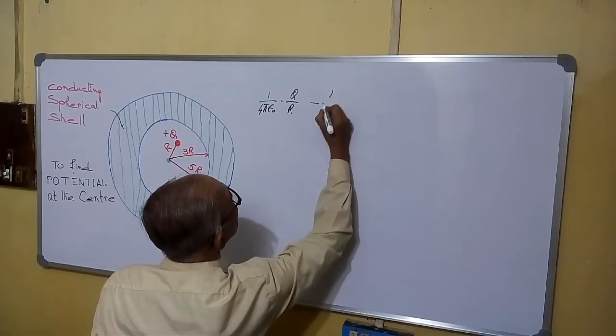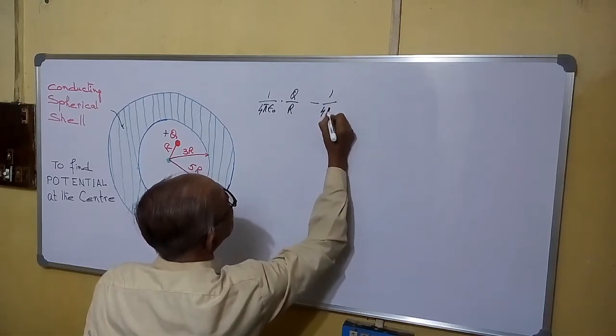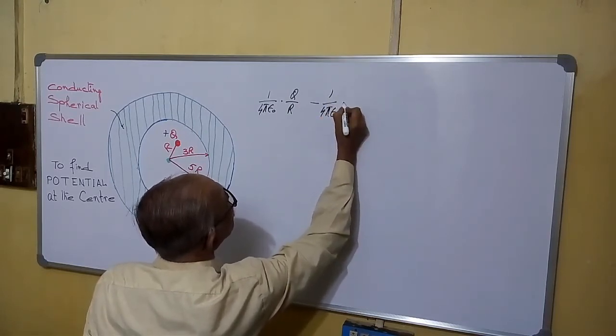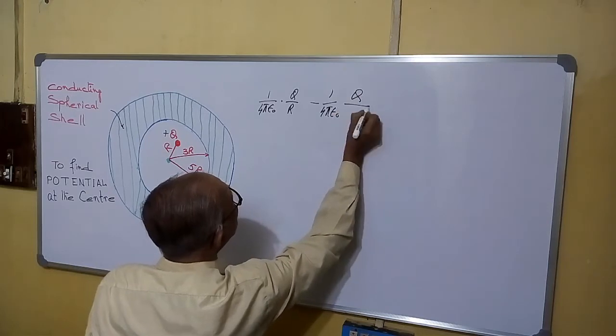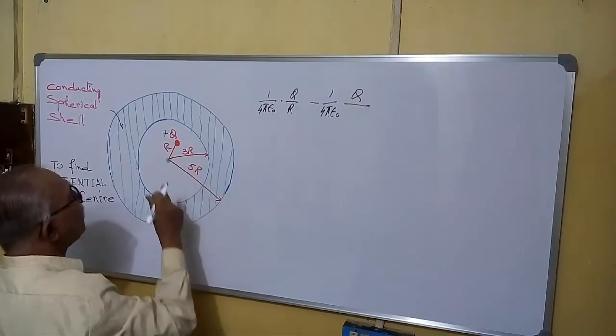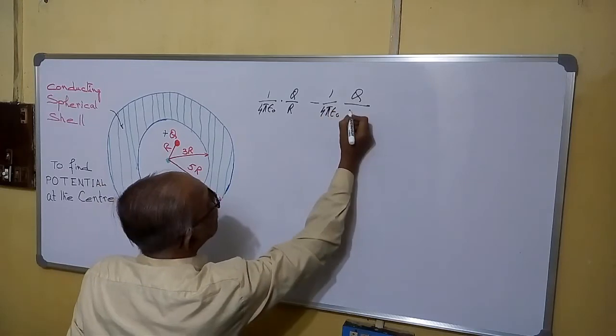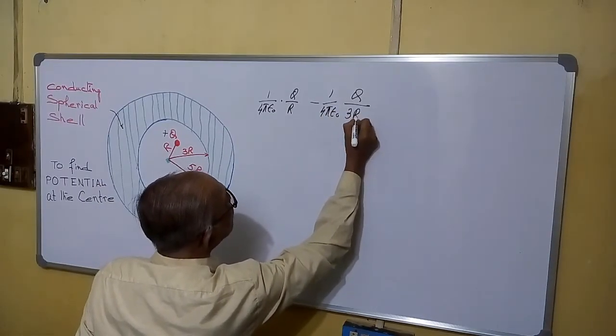1 by 4 pi epsilon 0 into Q by—since the charge is negative, we are putting negative sign—3R.